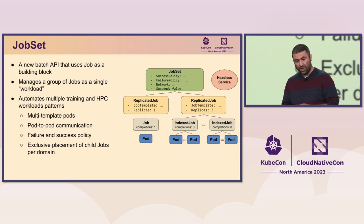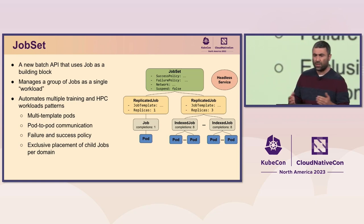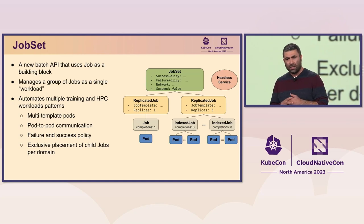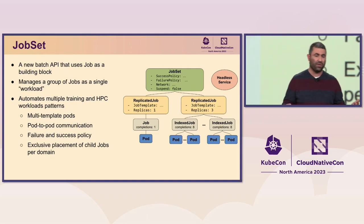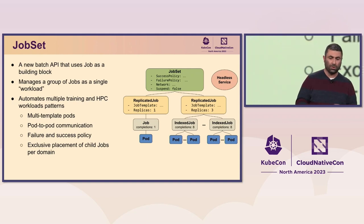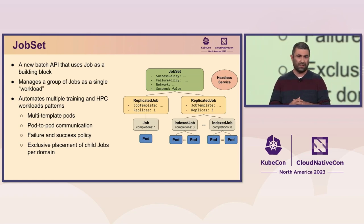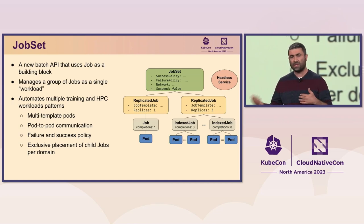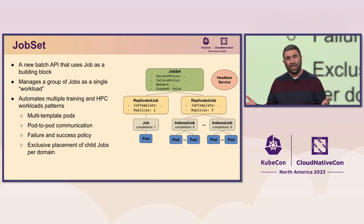We're also trying to provide some common failure and success policies. Like, when do we consider the whole workload as failed? In some cases, for example, you have a leader-follower pattern. If one of the followers fails, you don't necessarily need to fail the whole workload, but if the leader fails, you want to fail the whole workload. Same thing with success — when do we consider the whole workload successful? If we're managing a group of jobs, which job, when it succeeds, should make the whole workload considered successful? Or should all child jobs succeed?